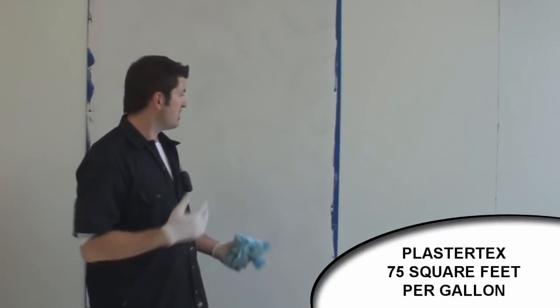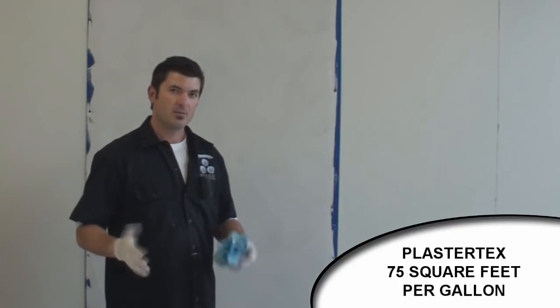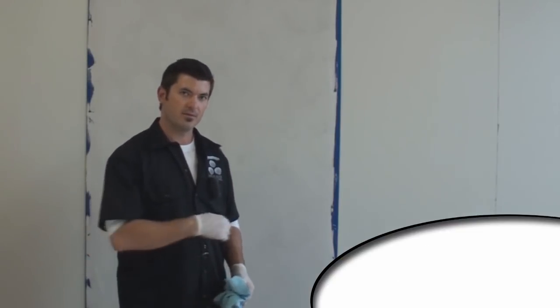So on the plaster text for my first coat, it turns out I got roughly about 70 to 75 square feet a gallon for the first coat.